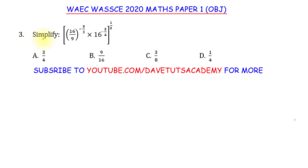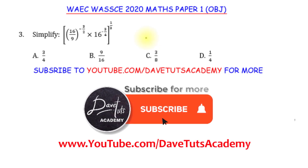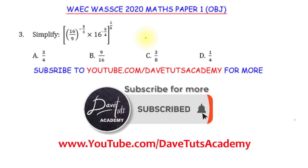In this question, we have to simplify 16 over 9 raised to power minus 3 over 2, times 16 raised to power minus 3 over 4, all in a bracket raised to power 1 over 3. This is a classical question that is going to test our understanding and application of the rules of indices.